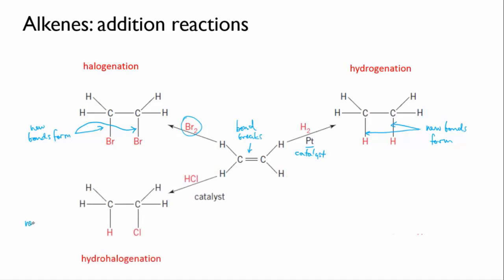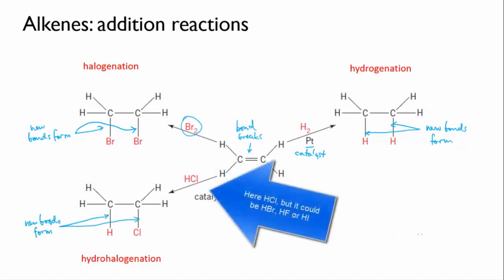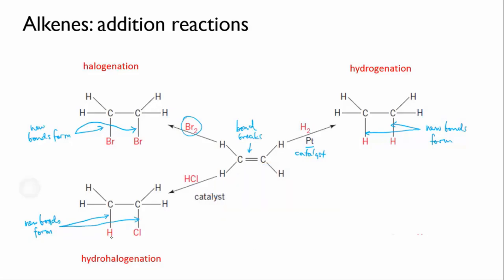Another possibility is hydrohalogenation, sort of a cross between halogenation and hydrogenation. In this reaction a hydrogen halide or in effect an acid will add across the double bond so that one carbon gets an extra hydrogen and the other carbon gets a halogen atom of some kind.